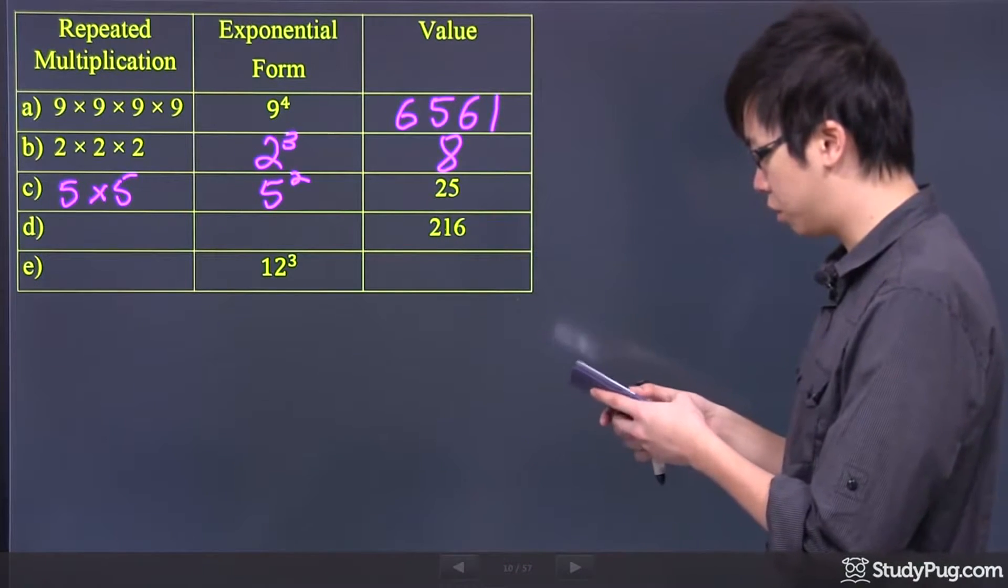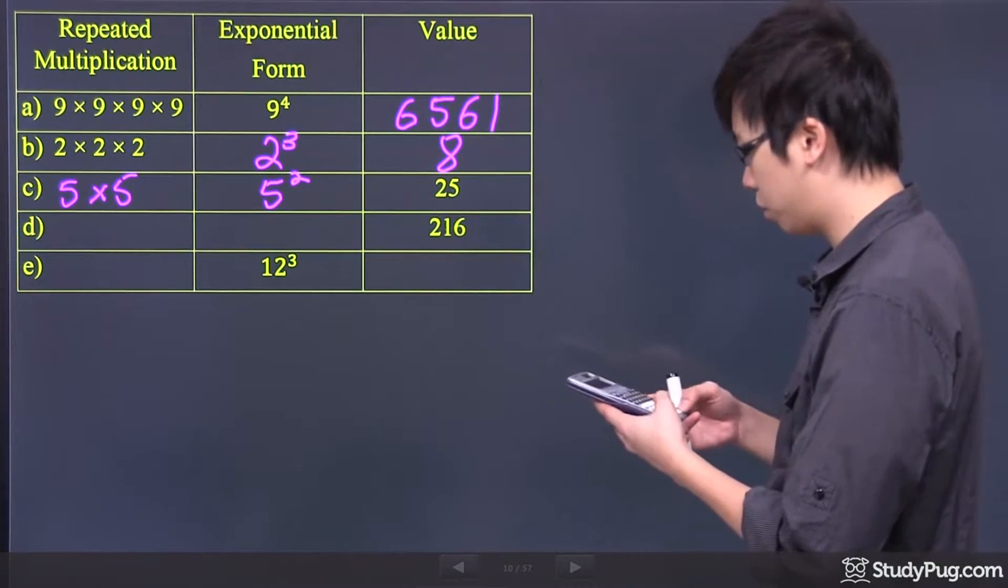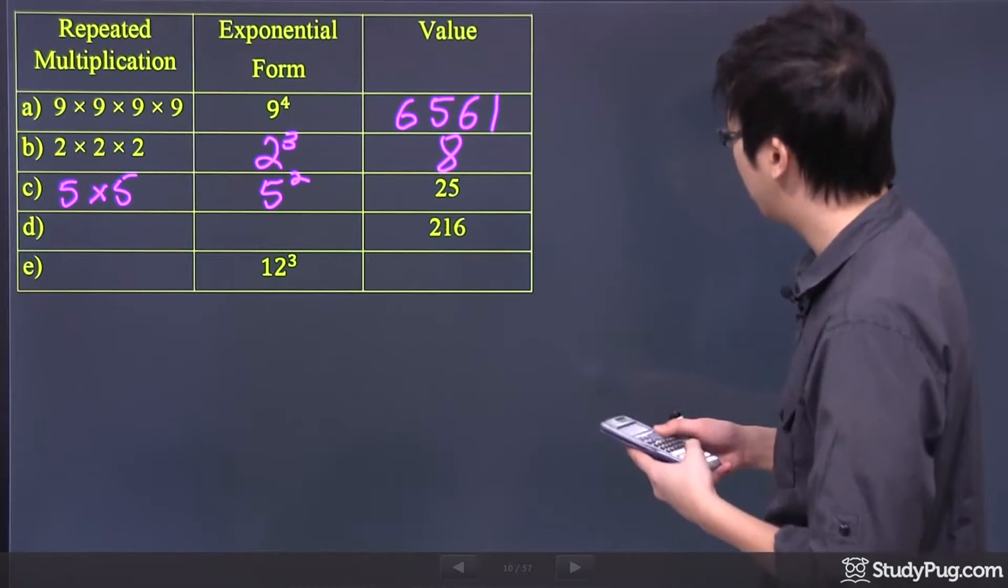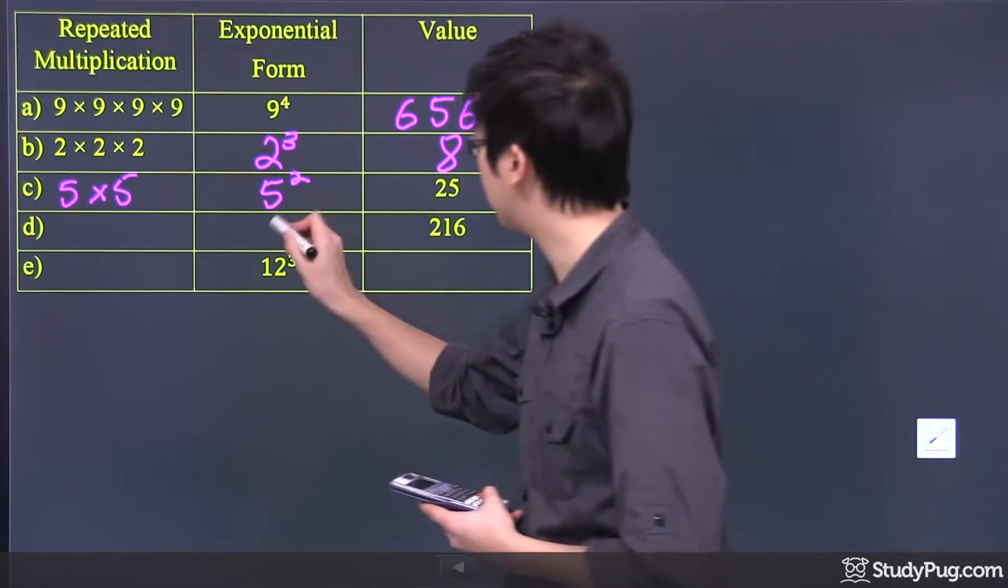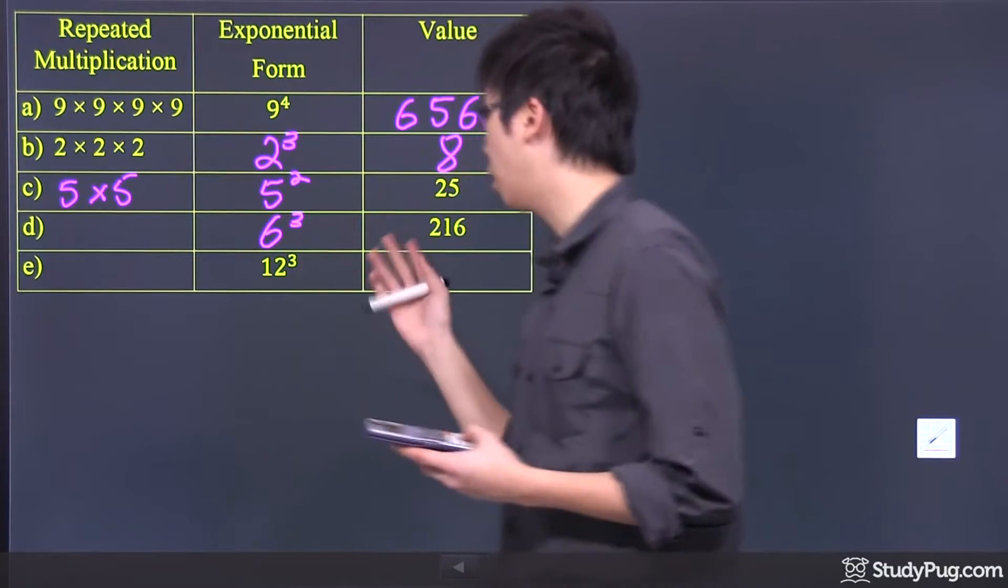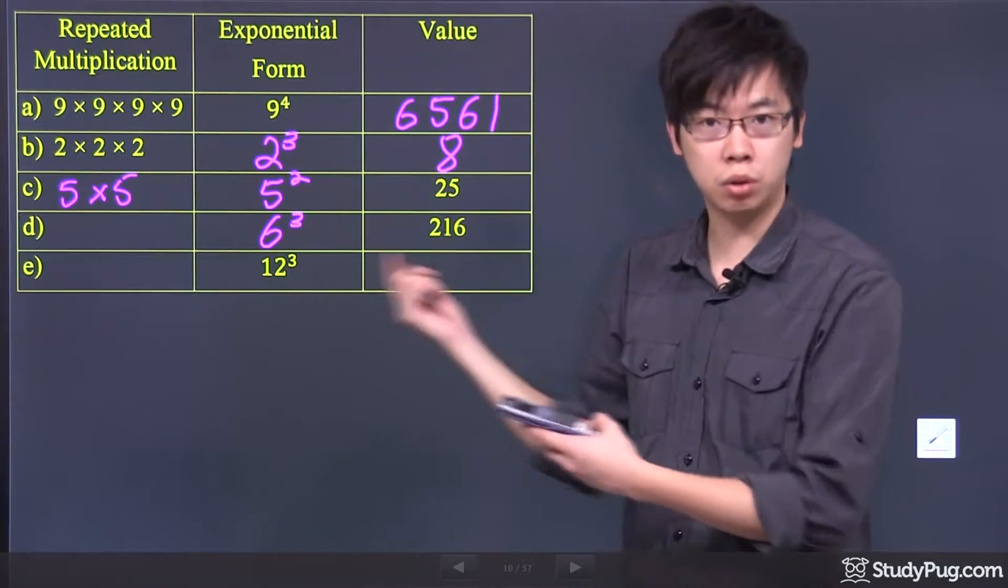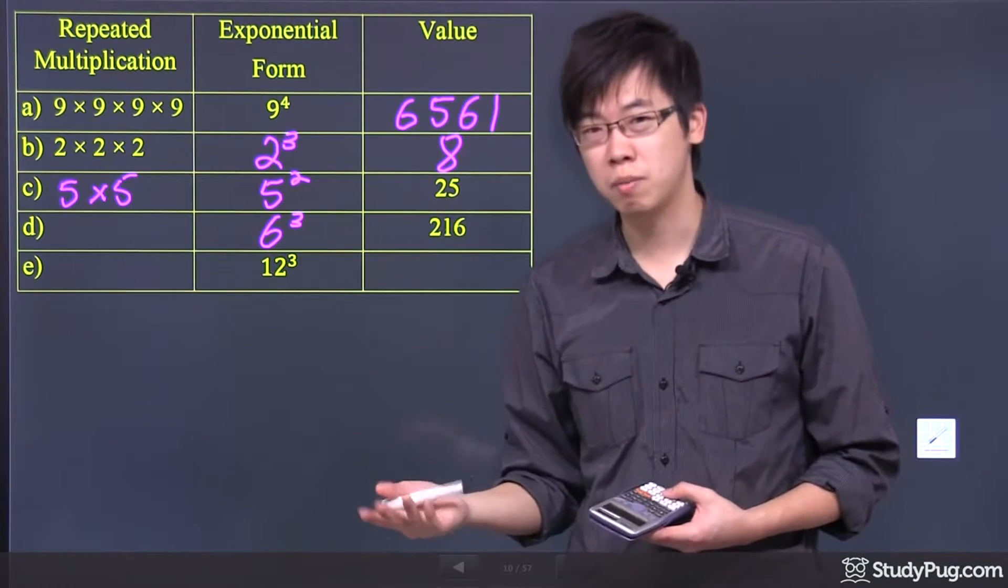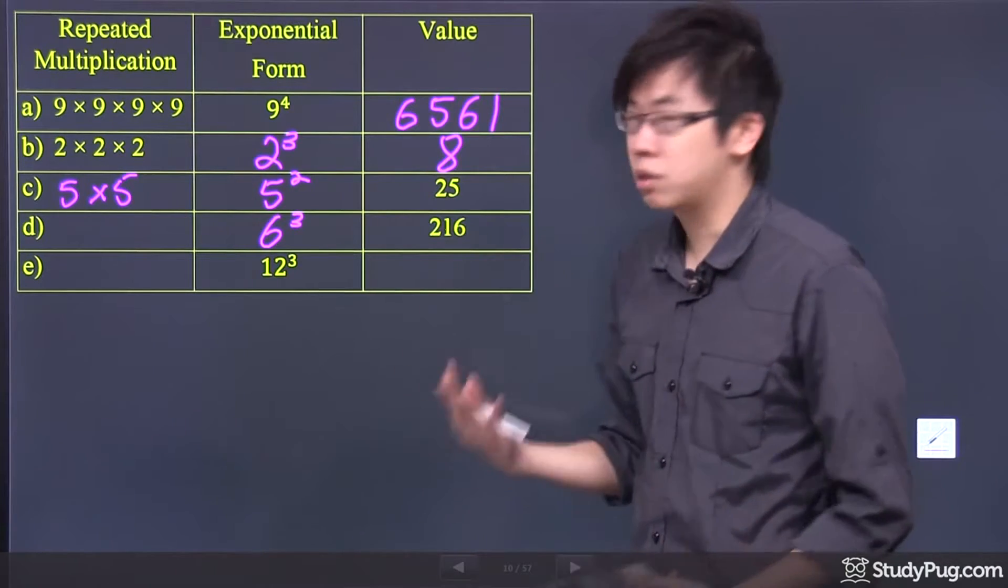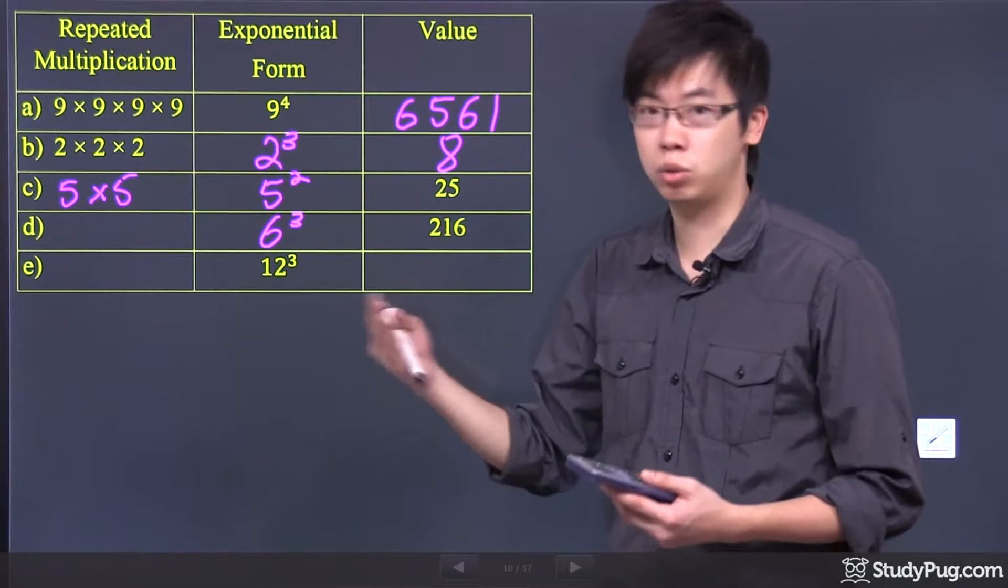216 right here, so what do we have for 216? That is such a weird number. Let me see what I have right here. Could it be 6 to the power of 3? I think so, so what we have is 6 to the power of 3. Now, how do we know that it's the base of 6, and it's raised to the power of 3 to give you 216? Sometimes, you can actually do the prime factorization, but for now, it's best for you to go and memorize all the powers from 1 to 12.